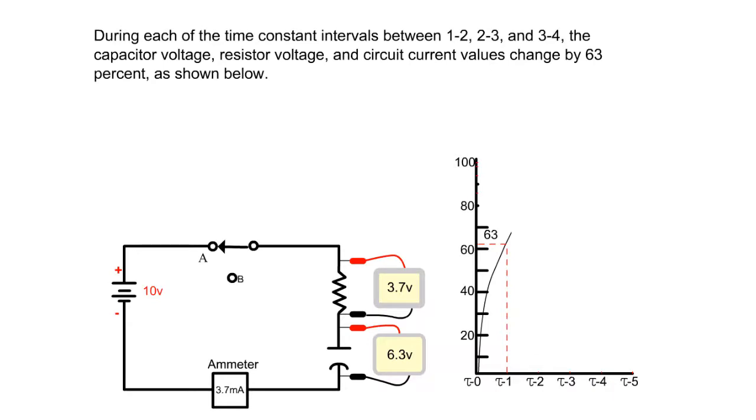During each of the time constant intervals between 1 to 2, 2 to 3, and 3 to 4, the capacitor voltage, resistor voltage, and circuit current values change by 63 percent, as shown below.